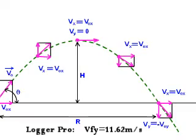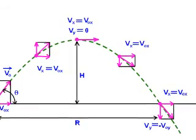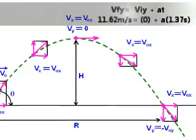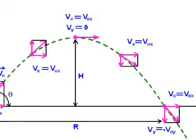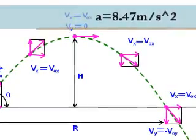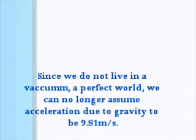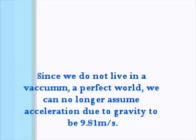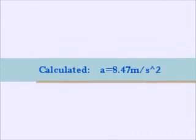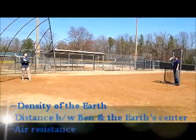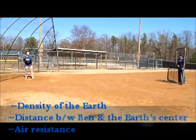We then used the final velocity from LoggerPro to determine the actual force due to gravity. In a perfect scenario, it would be 9.81 meters per second squared. From our calculation, we got a force of gravity of 8.47 meters per second squared. Many things can account for this difference, including the density of the Earth, the distance between Ben and the Earth's center, and other factors.